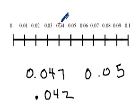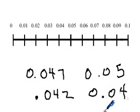So if I have 0.042, again, that's going to be closer to this hundredth here. So to two decimal places, that would be 0.04. So this one's going to round down to 0.04. This one's going to round up to 0.05.